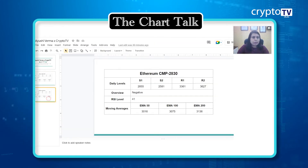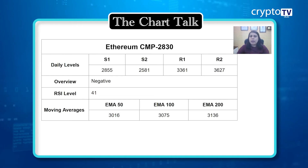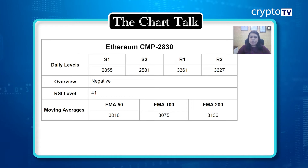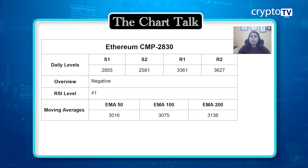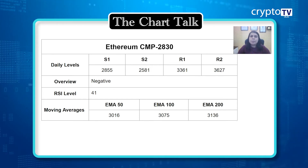Now moving on to Ethereum, which is also following the same pattern, trading at $2,830. The psychological level for Ethereum is the $3,000 level. It was down about four percent yesterday and that's the reason it's coming back to the $2,800 level. The overall view is negative. The RSI is at 41. Looking at the moving averages: the 50 EMA is at $3,016, the 100 EMA is at $3,075, and the 200 EMA is at $3,136.